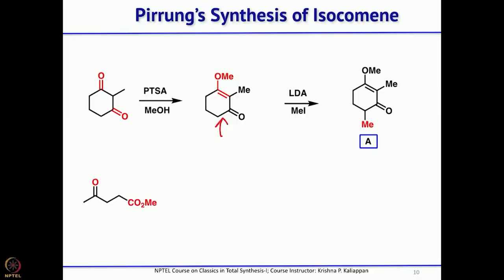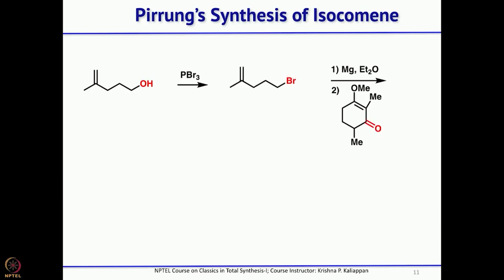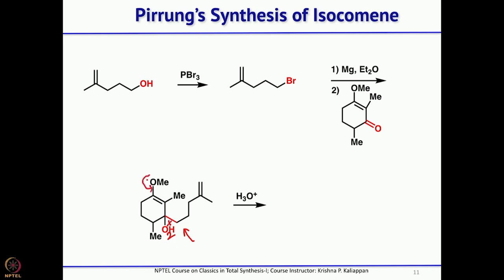For fragment B, starting from a gamma-keto ester, a Wittig reaction goes selectively to the ketone to give the double bond. Reduction of the ester with LAH gives the corresponding alcohol. Then convert that into the bromide, make the Grignard from that bromide, and add it to the enone. This gives the tertiary alcohol. Simple acid treatment then makes the hydroxyl a good leaving group, the lone pair displaces water, and that leads to the key precursor for the intramolecular [2+2] photocycloaddition.